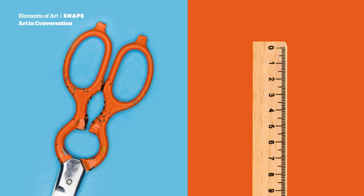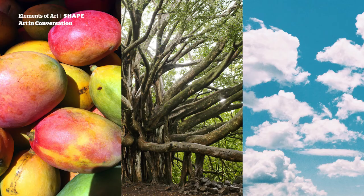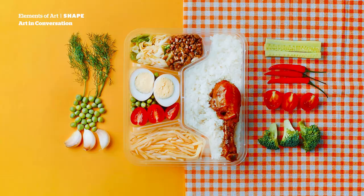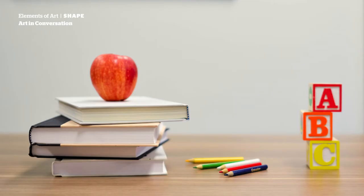You might find an oval in the handle of your scissors or a ruler the shape of a rectangle. Shapes such as mangoes, tree branches, or clouds are considered irregular or organic. Think about shapes that might be in your lunchbox. Sometimes the shape defies categorization and is a combination of both organic and geometric properties. Have a look around the classroom — do you see any geometric shapes?